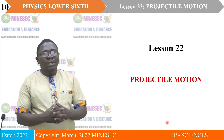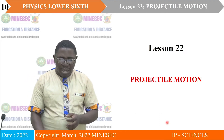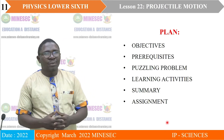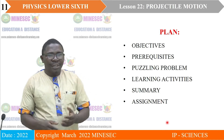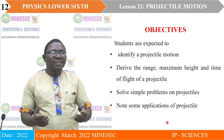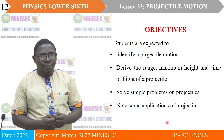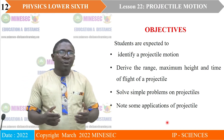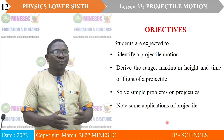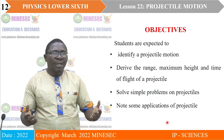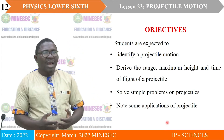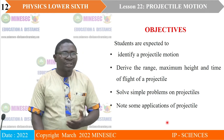We move to lesson 22, which is projectile motion, and it will follow this plan: objectives, prerequisites, causing problems, learning activities, summary, and assignments. You are expected at the end of this lesson to identify a projectile motion, to derive the range, the maximum height, the time of flight of a projectile, solve simple problems on projectile motion, and note some applications of projectile motion.